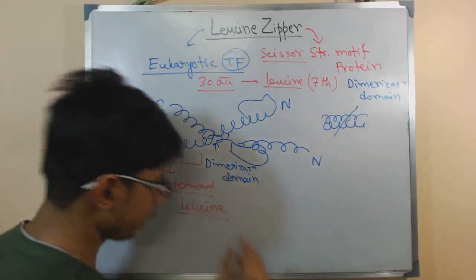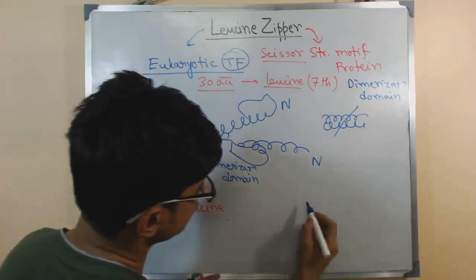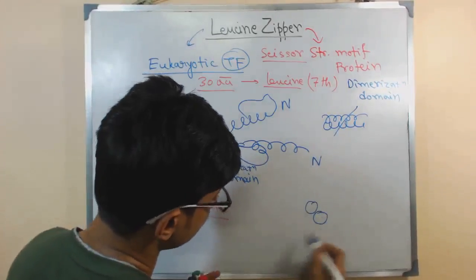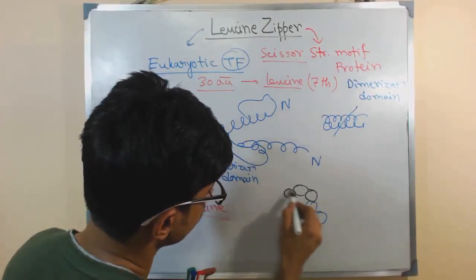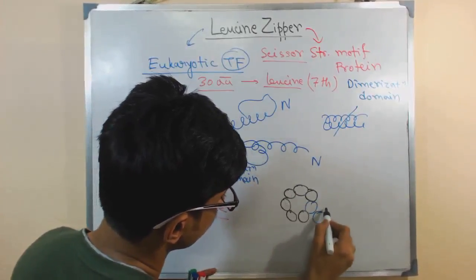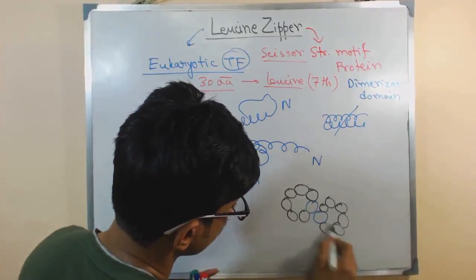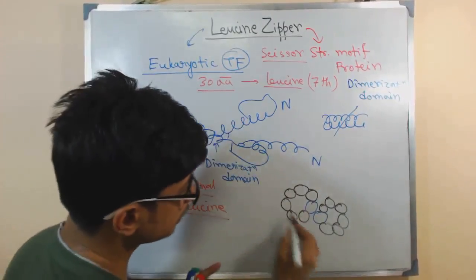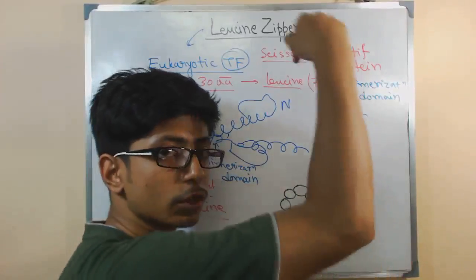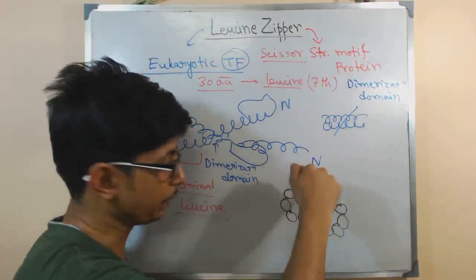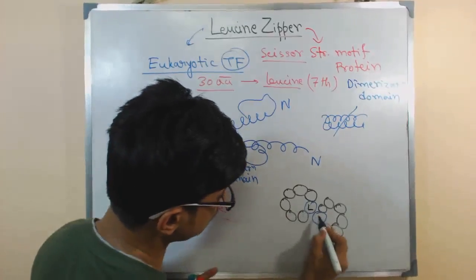Now if I draw this structure something like this, let's say this is a leucine. These are two different alpha helices. If you look at cross section, top view, you'll find this is a leucine, this is a leucine. Rest of them are different amino acids outside.